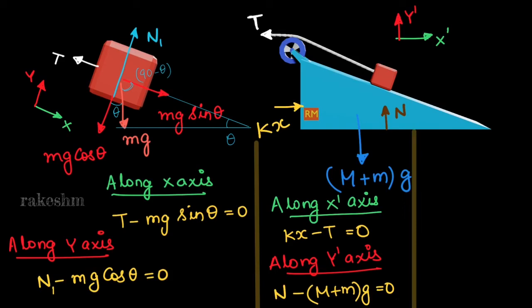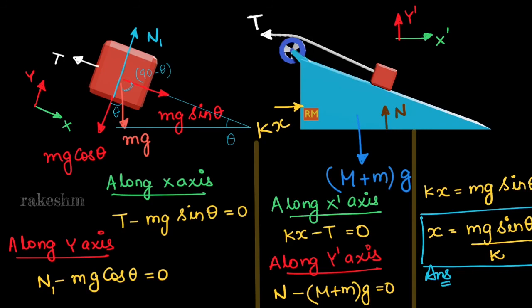I want you to observe the equations here. This equation is T minus mg sin theta equals to 0 and kx minus T equals to 0. If you eliminate T from both these equations, we will only have our variable as x. We are writing kx equals to mg sin theta. From there, x equals to mg sin theta by k.